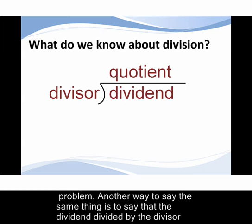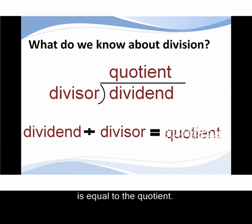Another way to say the same thing is to say that the dividend divided by the divisor is equal to the quotient.